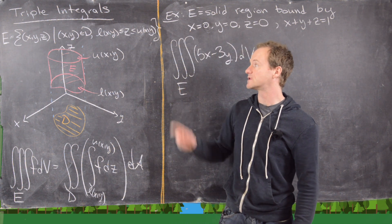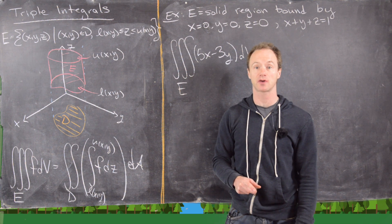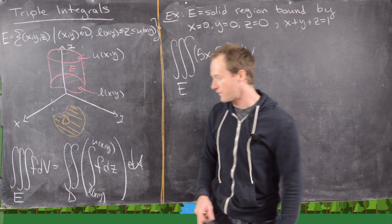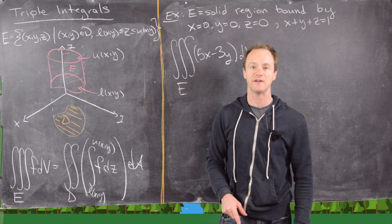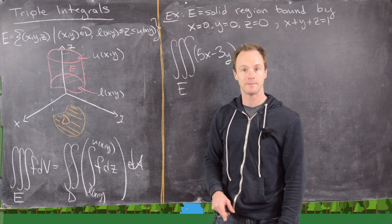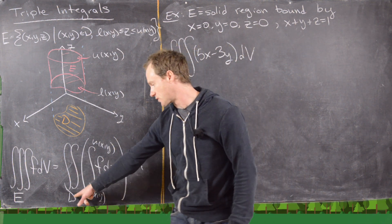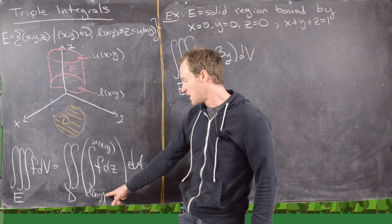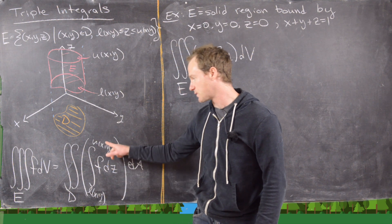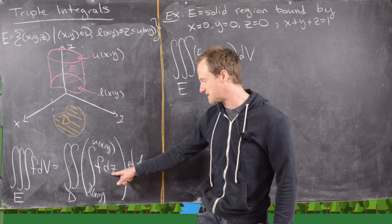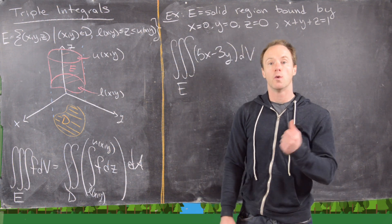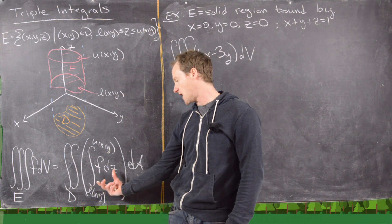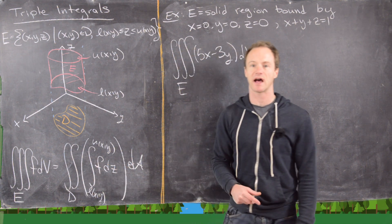So now if we want to go ahead and take the triple integral over this region E, we can do it in the following way. The triple integral over that region E of F dV is given by the double integral over D of the single integral from this lower function L(x, y) to this upper function U(x, y) with respect to z. What's lucky about this is we're able to put a triple integral in terms of an inside single integral and an outside double integral.